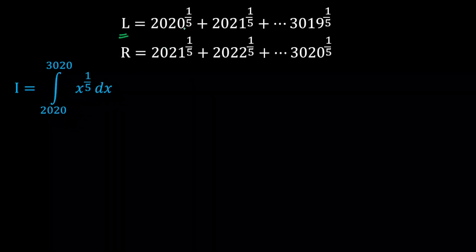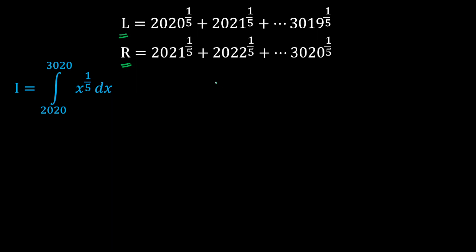L and R are both given as fifth root series and there is not much difference between them — only the first or last term differs, as you can see. I is given as the integral of x^(1/5).